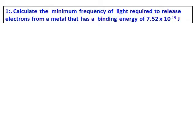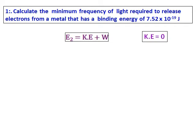Calculate the minimum frequency of light that is required to release electrons from a metal that has a binding energy of 7.52 x 10^-19 J. This is the case where we just want to knock it off. That means the energy with which we have to hit the nucleus is equal to the binding energy or in other words, the kinetic energy is 0.